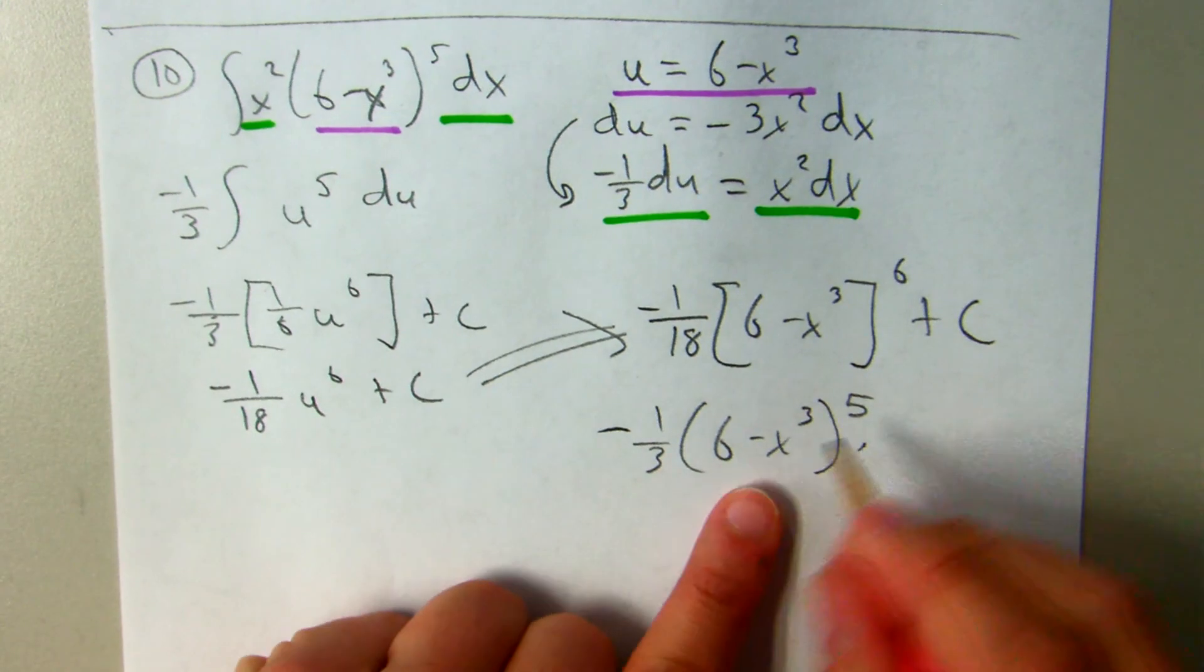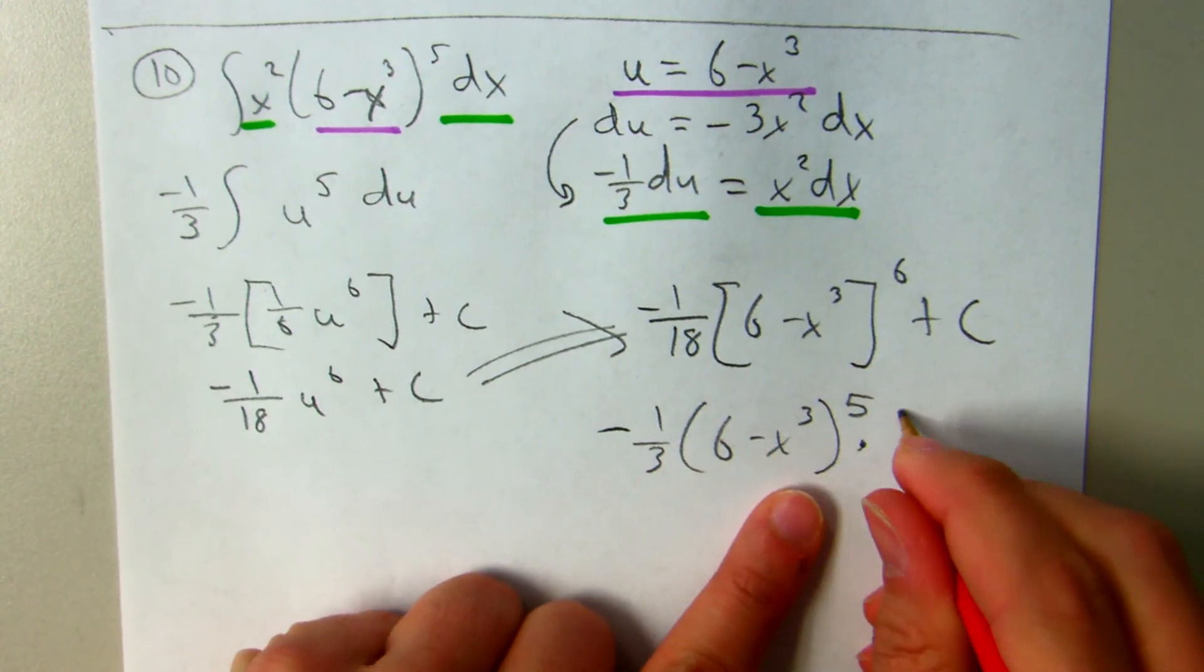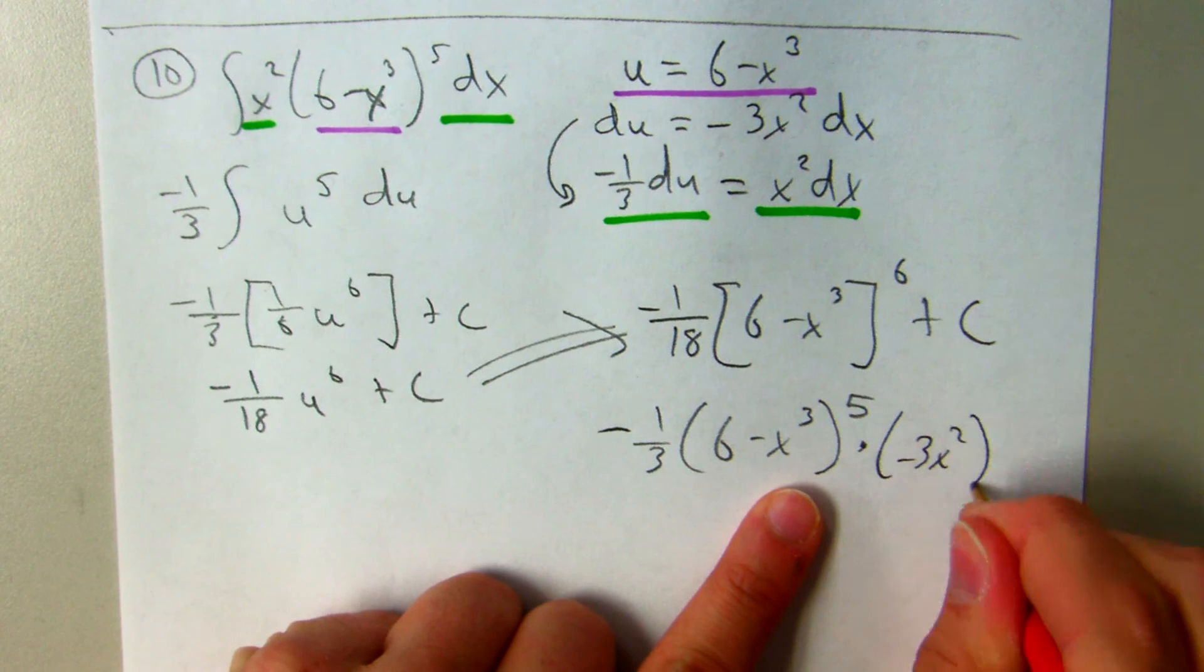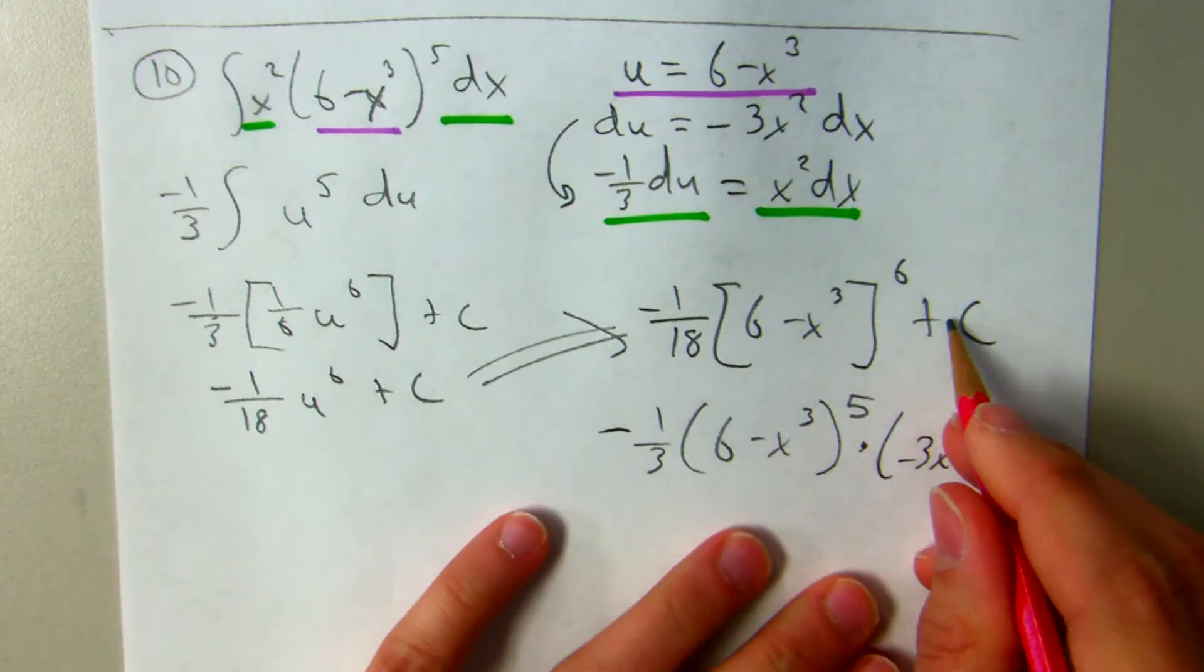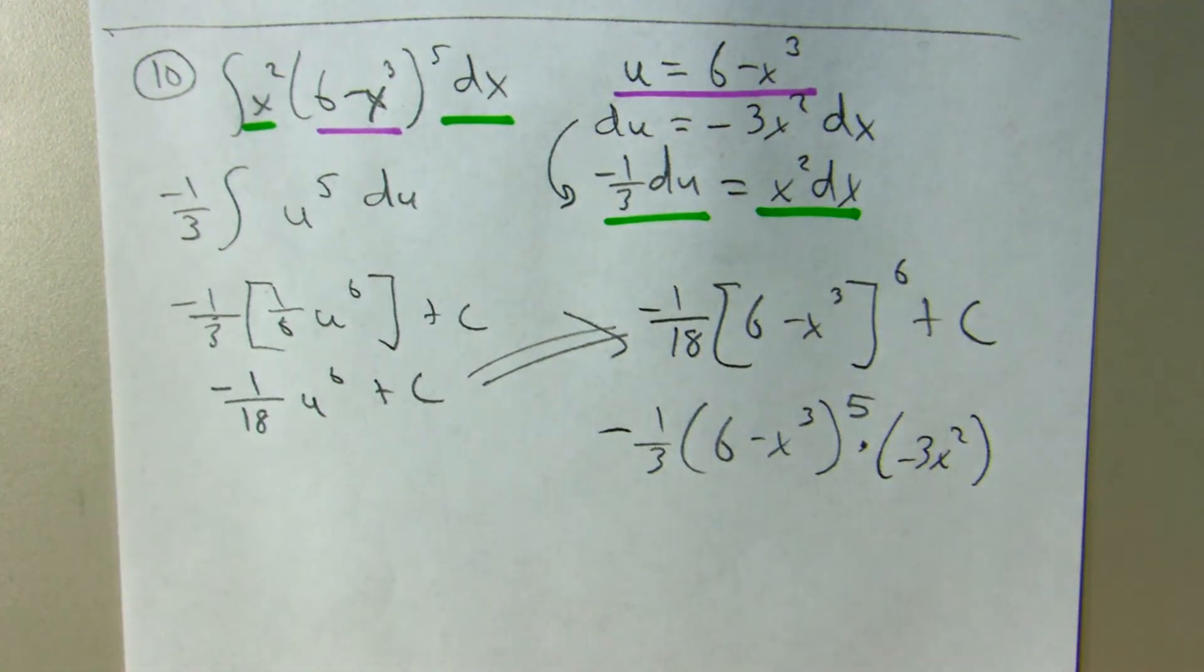And I have to worry about the chain rule. So, the derivative of the inside would be times negative 3x squared, and then the derivative of the constant would be 0, so that just goes away.